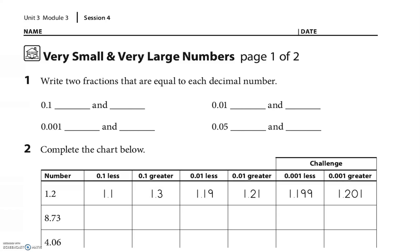Hey everyone, this is Unit 3 Module 3 Session 4 homework. As always, please make sure you try as many as you can. If you're stuck, press play, and once you get it, try a couple and then press play again to see if you got your answers right. All right, here we go — two fractions are equal to the decimal number.